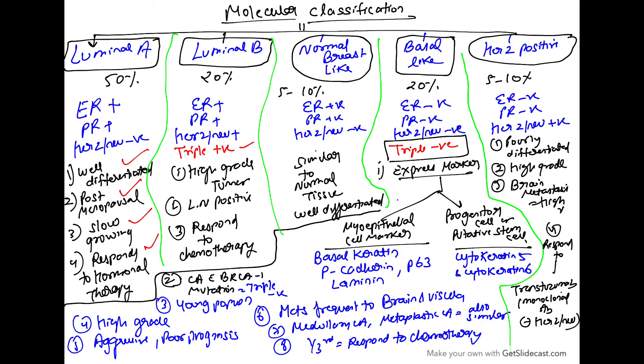Luminal B is seen in 20% of NST carcinoma patients. It is ER-positive, PR-positive, HER2-neu positive — triple positive — and will respond to chemotherapy. It is a high-grade tumor and is lymph node positive. The three important points are: lymph node positive, high grade, and responds to chemotherapy.